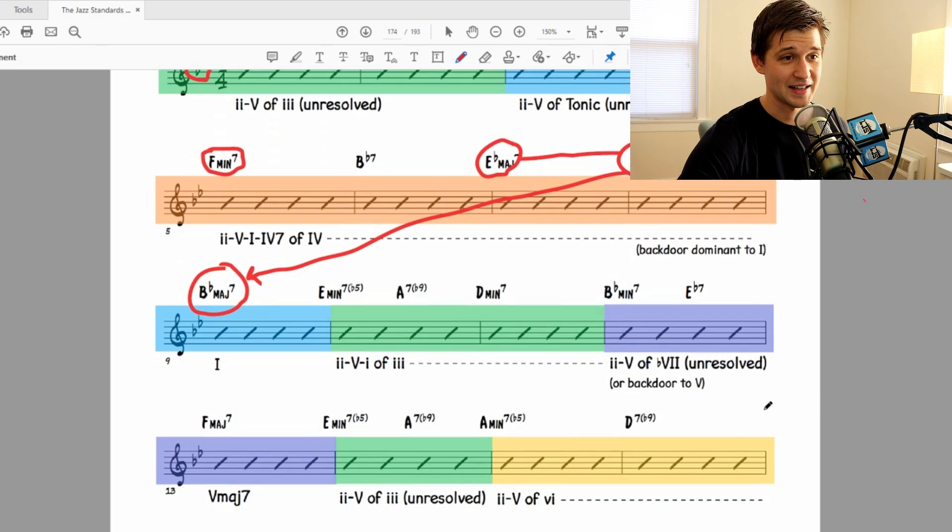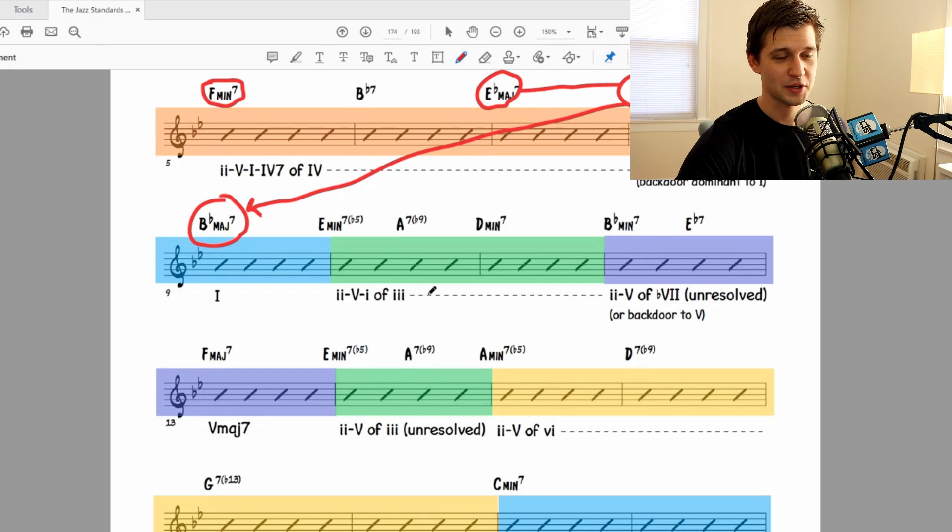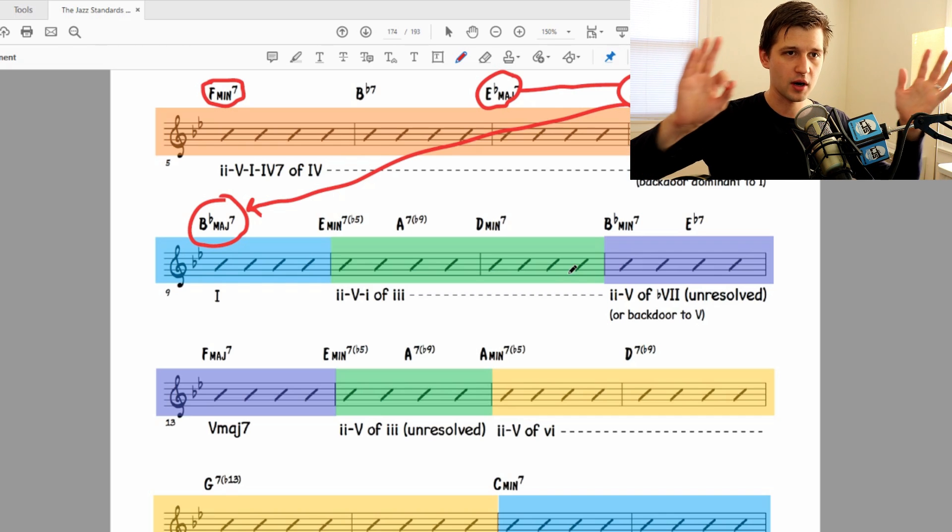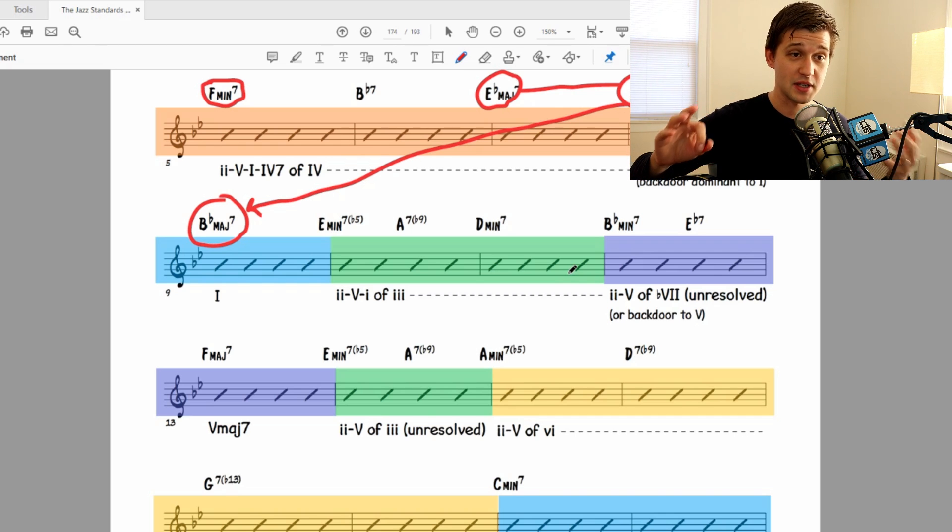But let's continue on because it doesn't stay there for very long. Suddenly we go into green, which as we talked about before, is the key of concert D minor. E minor 7, A7, D minor 7. And so what's going on there? It's a 2-5-1 of 3, but this time it's resolving. Before, it didn't resolve. This time it does resolve to D minor. That's the 3 chord to B flat major. B flat major 7, E minor 7, A7, D minor 7.